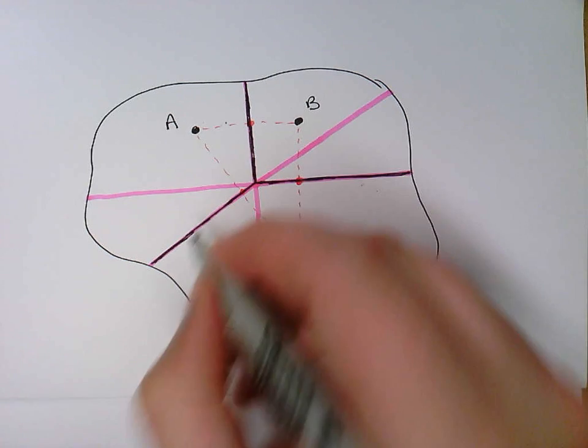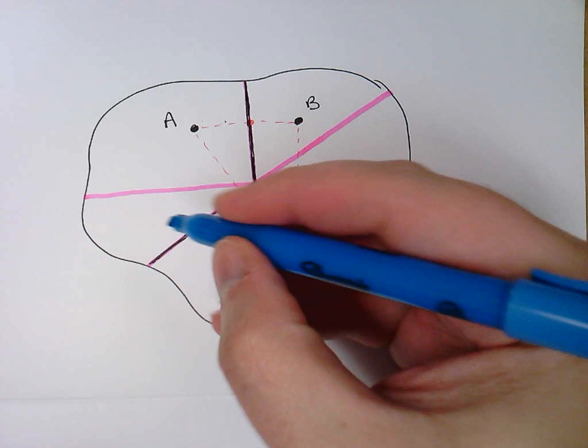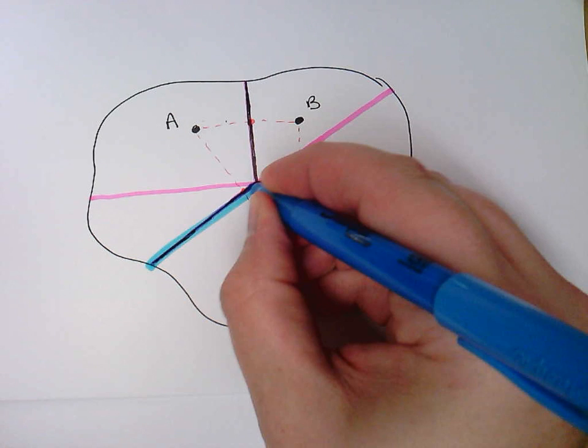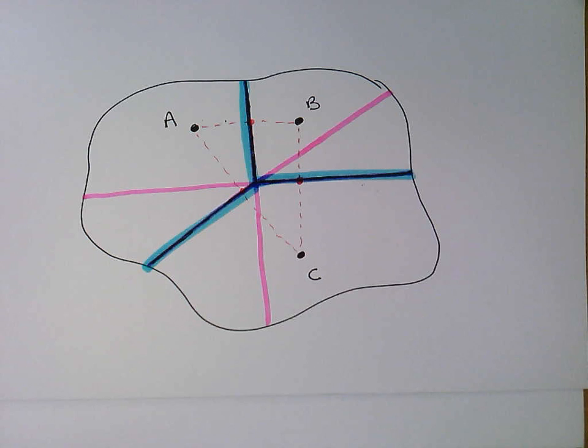And then finally, I want to split A and C. So I'm just going to do a line like that. Now if you focus on just those three lines, let me actually highlight them with a slightly darker color just so it's a little more evident. Try not to pay attention to the pink anymore. Just focus on the blue.